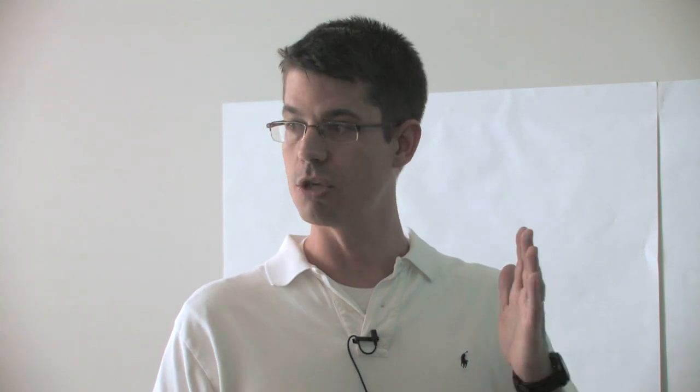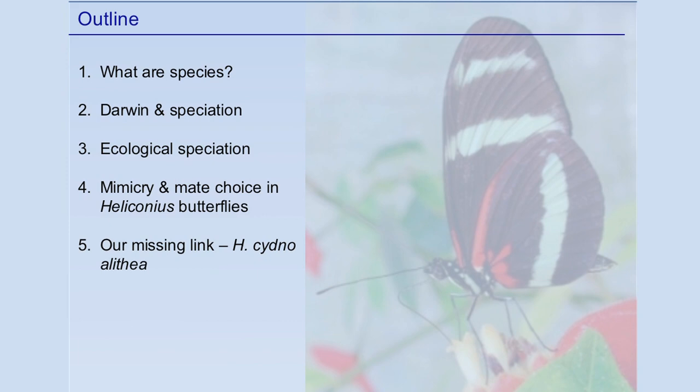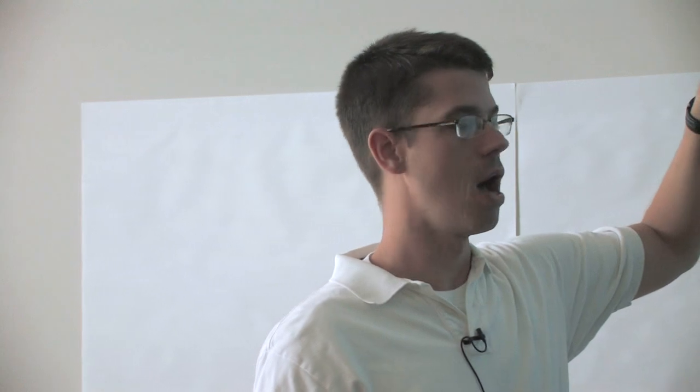Please ask questions if they come up — don't wait till the end. Before we get to ecological speciation, I want to briefly go over some background and history, since this is a nice opportunity to talk to teachers about what we think about speciation and where Darwin stood on the issue, because there's a lot of misunderstanding there. We'll talk about what species are, Darwin's view, ecological speciation, and finally the butterflies — color pattern mimicry, mate choice, and how that can generate new species.